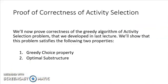I hope you now understand the greedy choice property and the optimal substructure property. Next, we'll see the proof of correctness of the activity selection program.